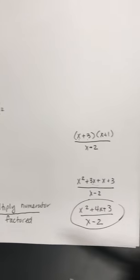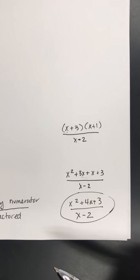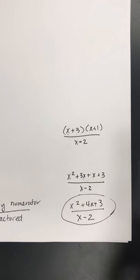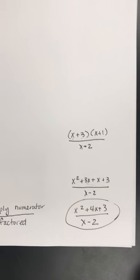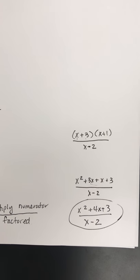And our preferred format for all answers is if you can multiply the numerator and factor the denominator. So my final answer here would be x squared plus 4x plus 3 all over the quantity x minus 2. So now you're going to try part C with practicing dividing and simplifying rational expressions.